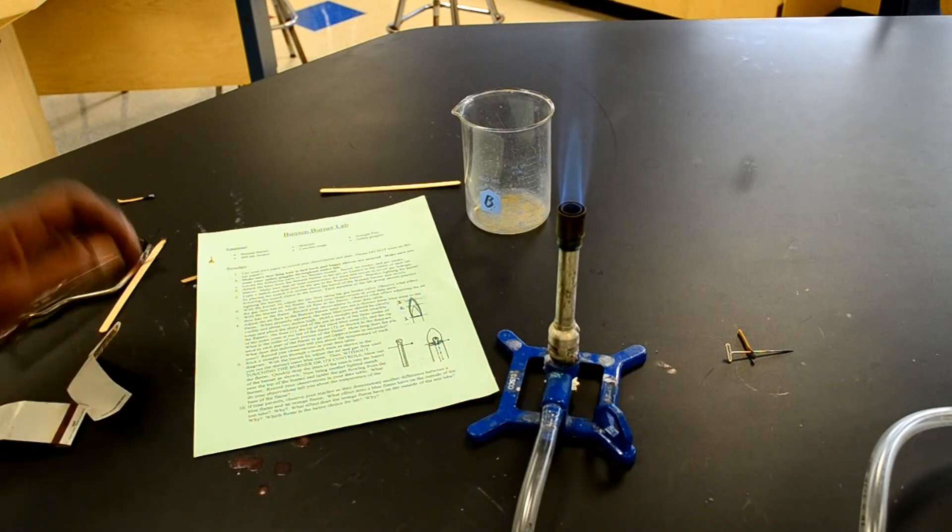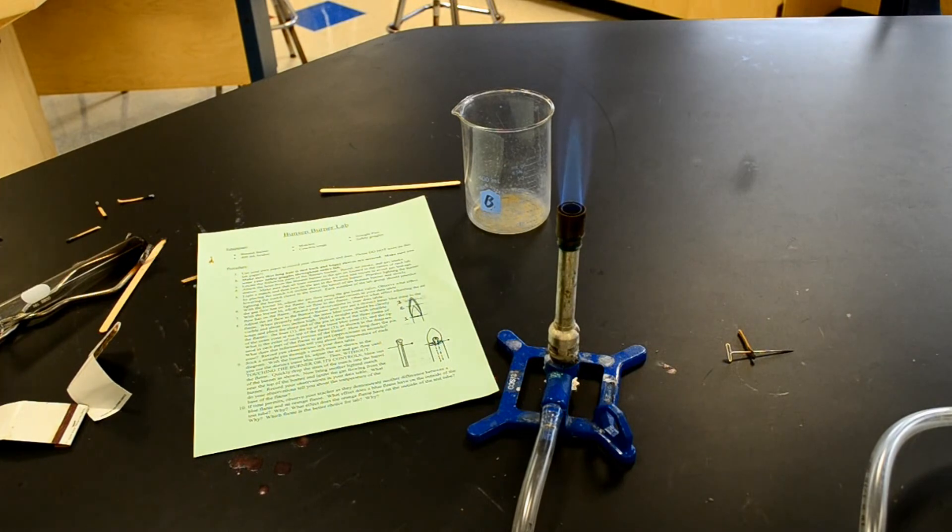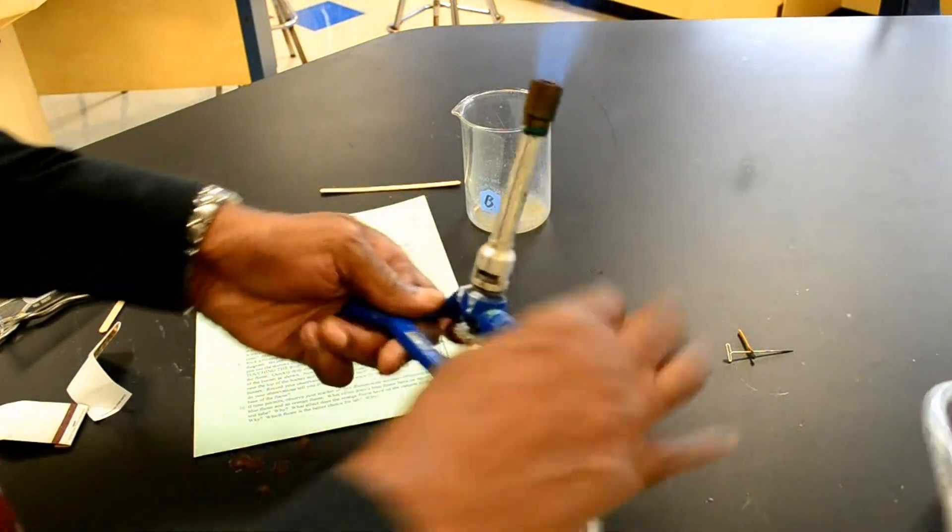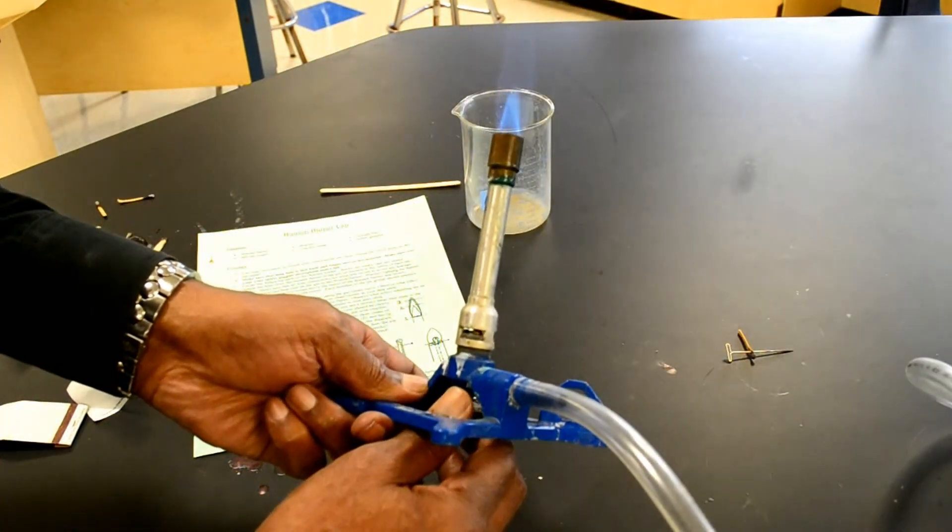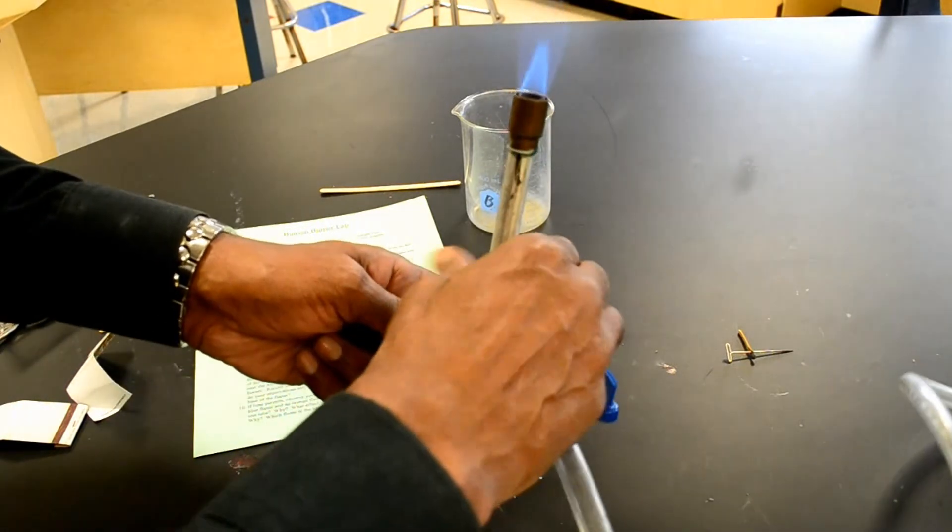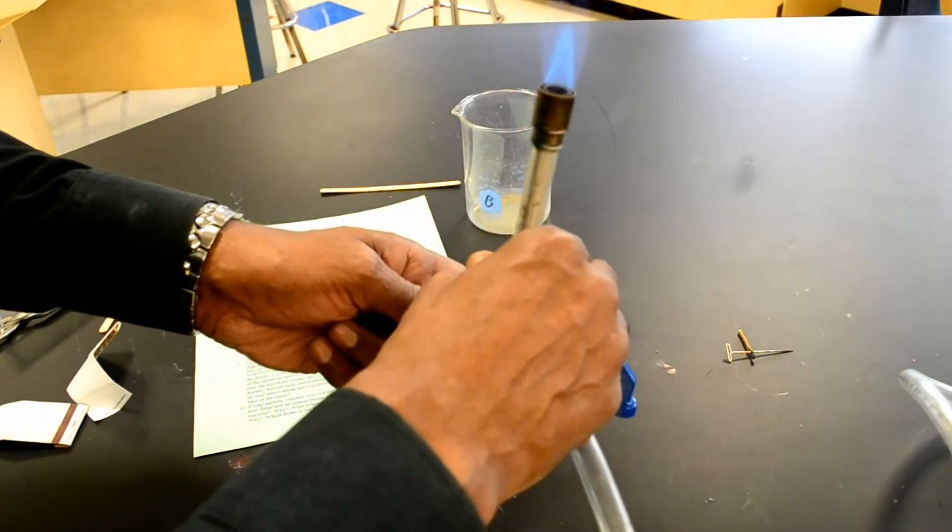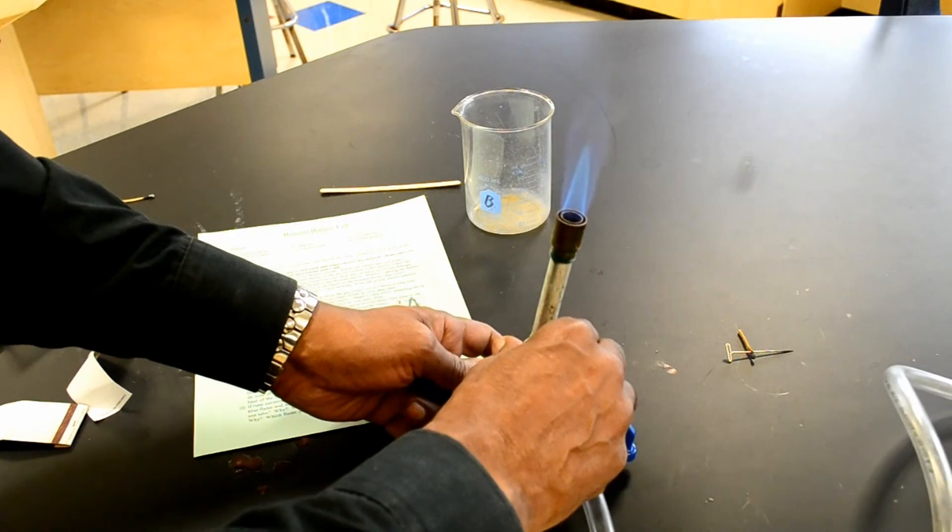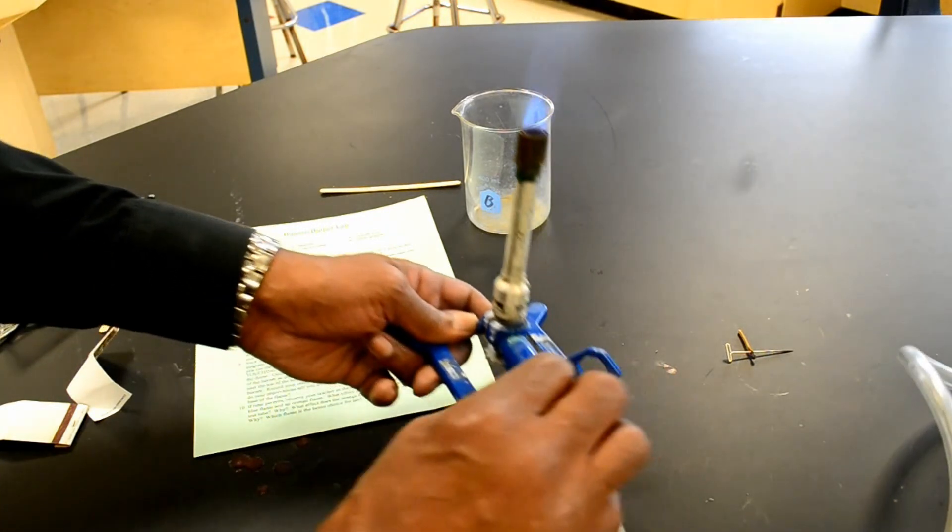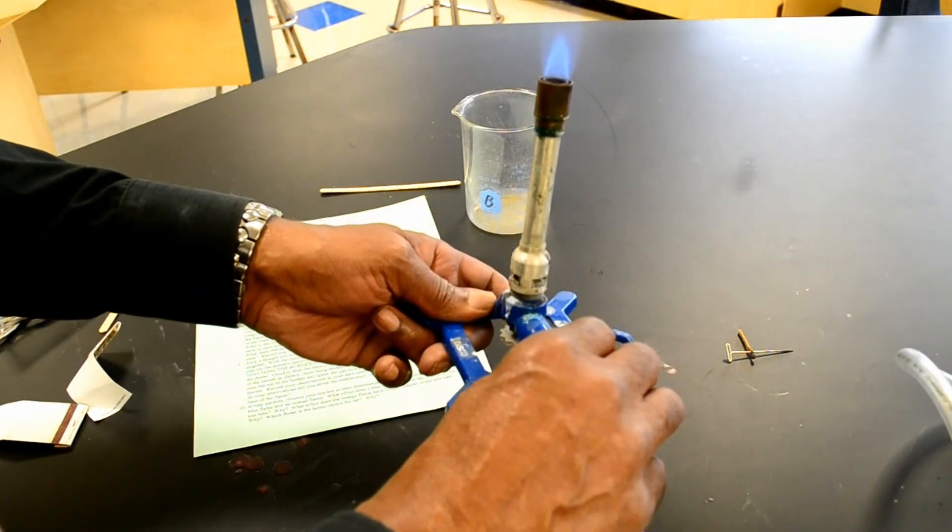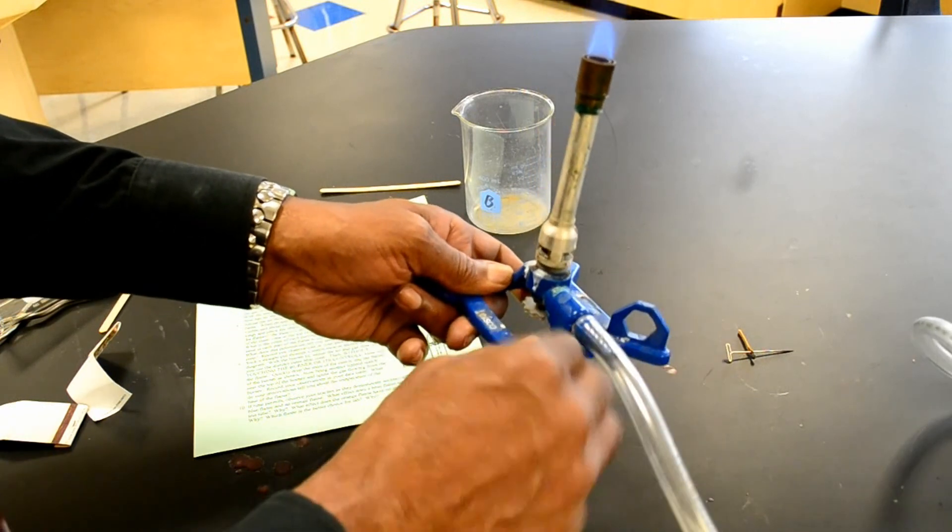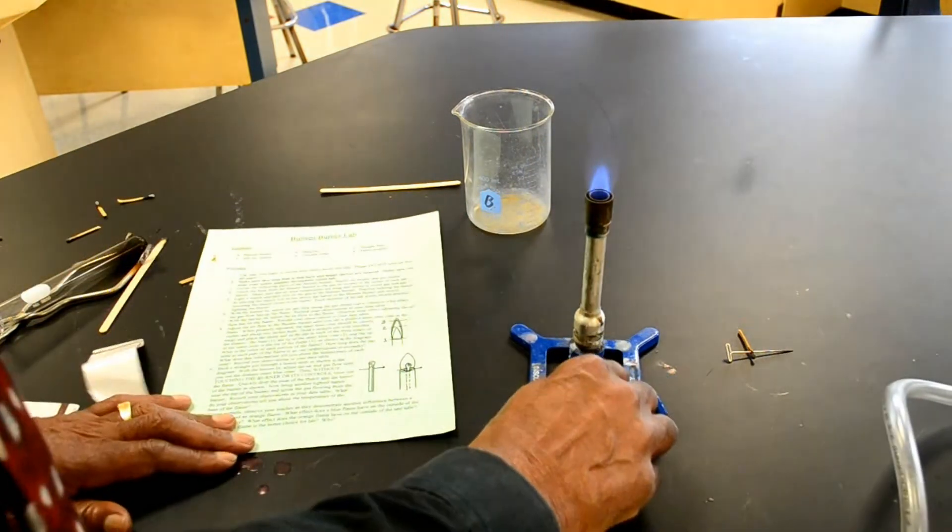So that's pretty much how to use the Bunsen burner. On the bottom, we have the spud. The spud controls the height of the flame. We have the air intake, which allows oxygen to get into the burner. The more oxygen it gets in, the hotter the flame. Gas intake tube. Right here on the burner.